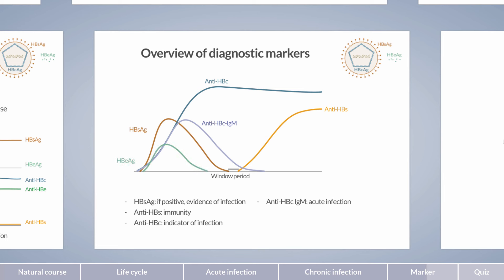HBe antigen and anti-HBe antibodies are important for the accurate assessment of chronic forms of infection. HBe antigen indicates the level of virus replication and is thereby a prognostic marker. It is positive in the immune-tolerant phase and in the immune-active phase and, in addition to the rate of replication, is also a marker of infectivity. Anti-HBe antibodies demonstrate the transition to infection with low-level viral replication — the inactive phase. This shift is also referred to as partial seroconversion.